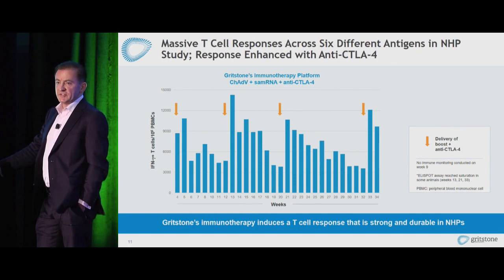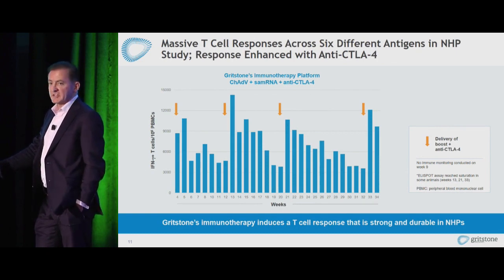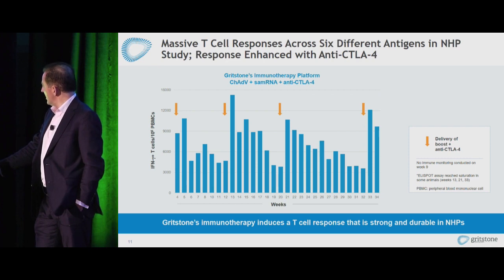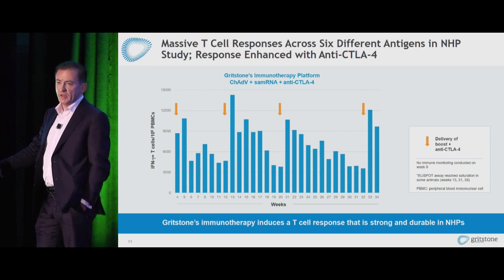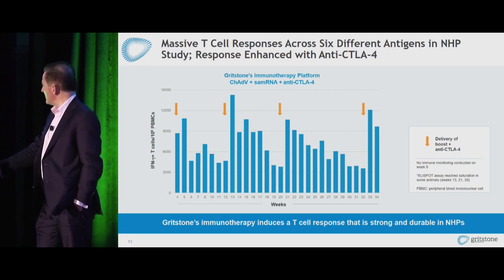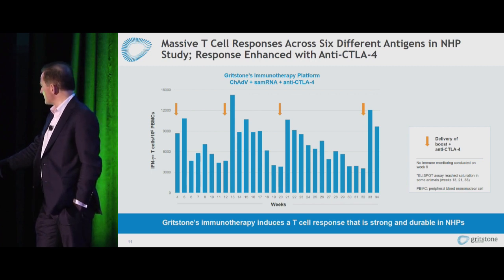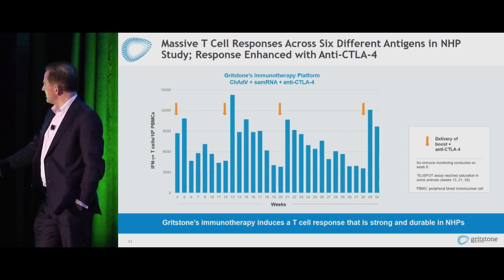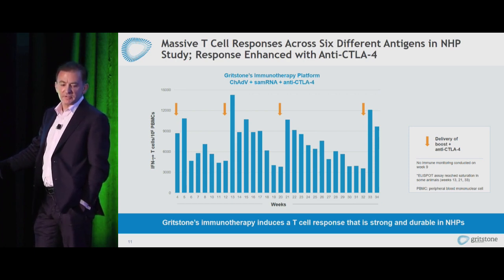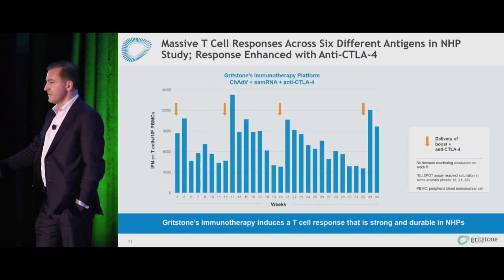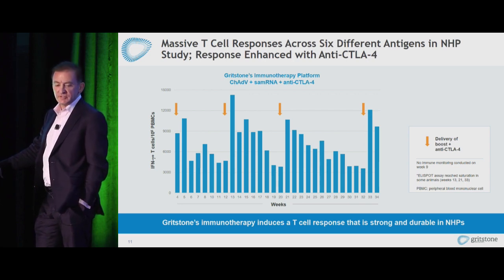In primates, we've tested this experimental system using a set of six SIV antigens — simian immunodeficiency virus antigens. We treated groups of about six monkeys per group with the full priming and boosting vector system together with systemic ipilimumab, which is known to augment antigen-specific T cell responses. Counting T cell responses using a standard overnight ELISPOT assay, we're generating between 5,000 to 10,000 antigen-specific spots per 10^6 PBMCs — a very substantial T cell response, one to two logs above what you'd see with lesser potency systems.